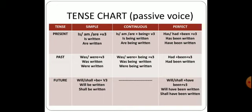For simple past tense, we use was/were plus verb's third form — so it will be 'was written' or 'were written.' For past continuous tense, we use was/were plus being plus verb's third form — being indicates a continuous form with I-N-G — so it will be 'was being written' or 'were being written.' For past perfect tense, we use had plus been plus verb's third form — so it will be 'had been written.'